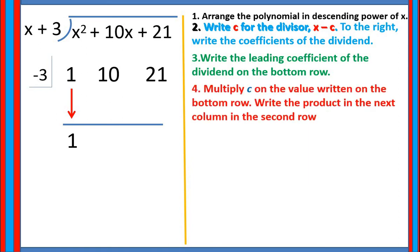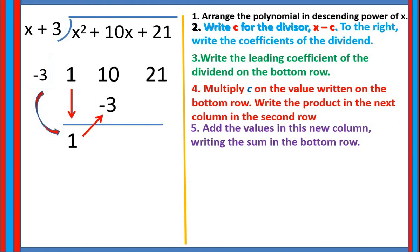Next step: multiply c by the value written on the bottom row, and write the product in the next column in the second row. So we multiply negative 3 times 1, which is negative 3, and place that product in the next column. Then add the values in the new column, writing the sum in the bottom row. Our next column has 10 and negative 3; adding them gives 7, so we place 7 in the bottom row.